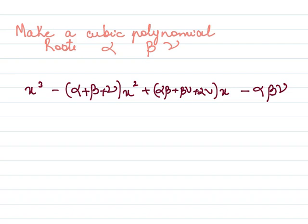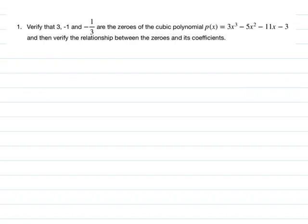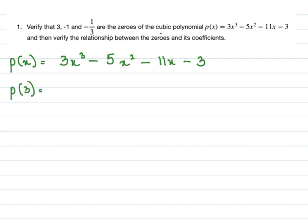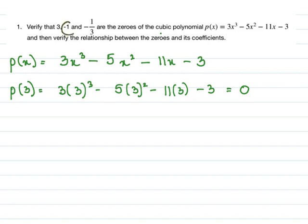We verify that 3, -1, and -1/3 are the zeros of p(x) = 3x³ - 5x² - 11x - 3. To show that 3 is a zero, we compute p(3) by substituting x = 3. Working this out gives 0, therefore 3 is a zero of the polynomial.